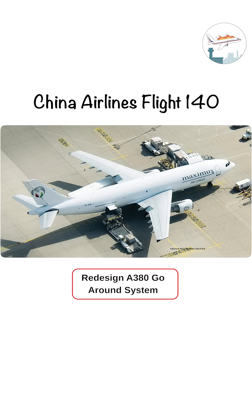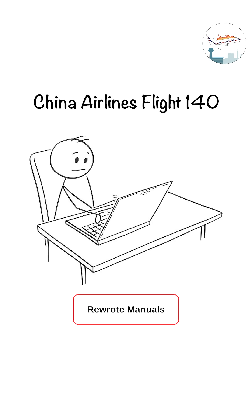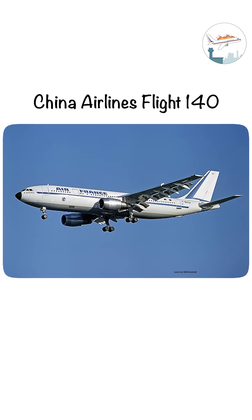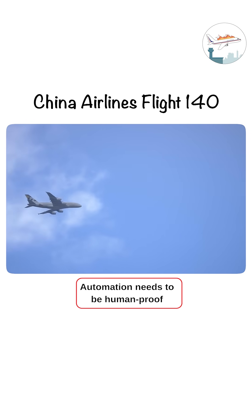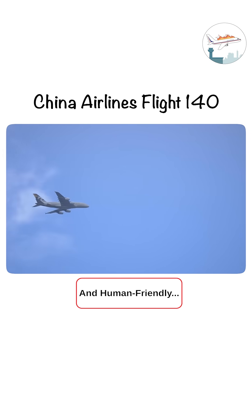After the crash, Airbus redesigned the A300's go-around system. They also rewrote manuals, updated training, and made flight control behavior more transparent for pilots. Flight 140 was a wake-up call: even in modern planes, automation needs to be human-proof and human-friendly.